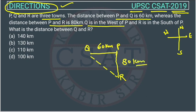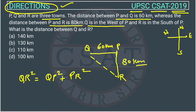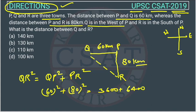Now, how do we find QR? We will use the Pythagoras theorem. Pythagoras theorem tells us that QR² = QP² + PR². So QP is 60 squared plus 80 squared, which gives us 3600 plus 6400, and this will be equal to 10000. So this is QR².